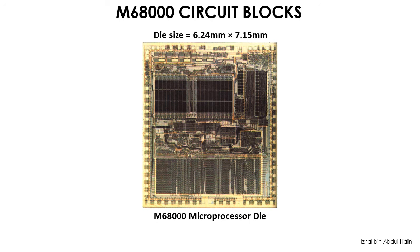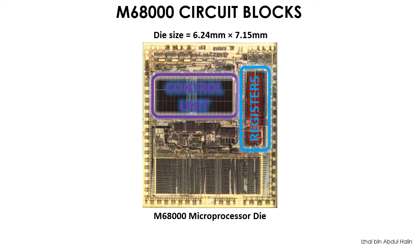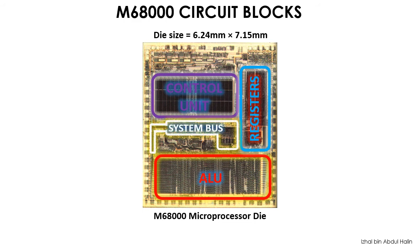The control unit is located in the top half of the chip. To the right we have the registers, and at the lower half of the chip we have the arithmetic logic unit. Can you identify the system bus? Yes, they are the black lines located in the middle of the chip. They interconnect the control unit, registers, and ALU.